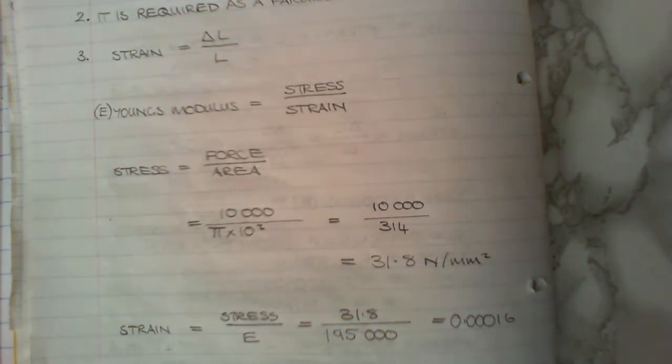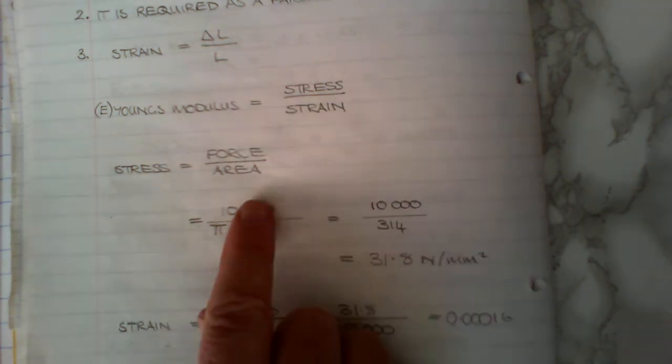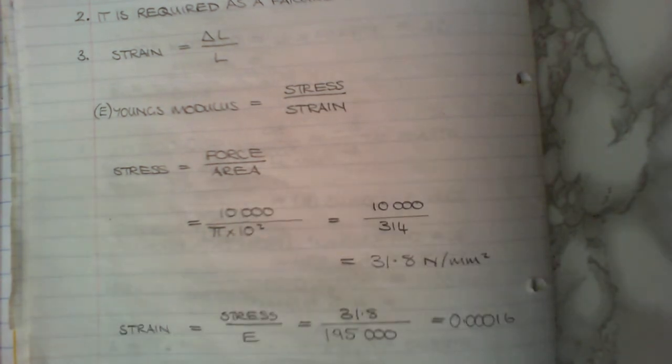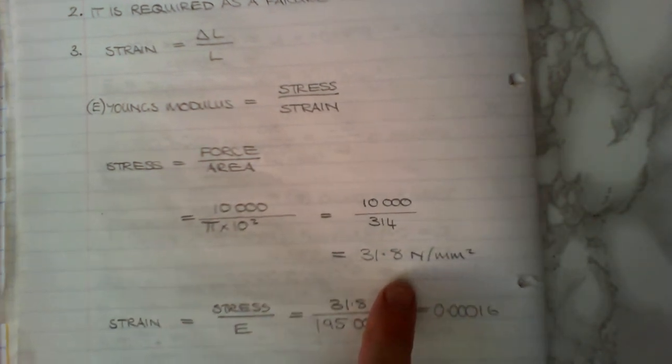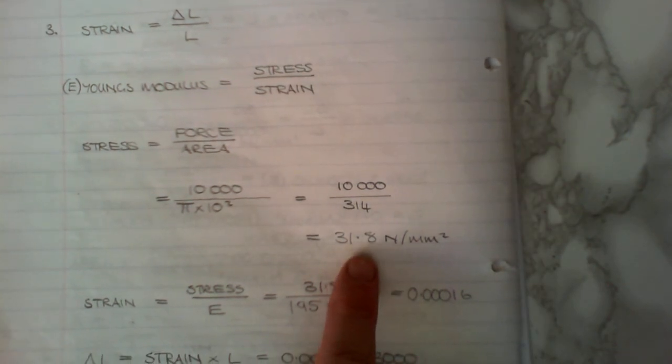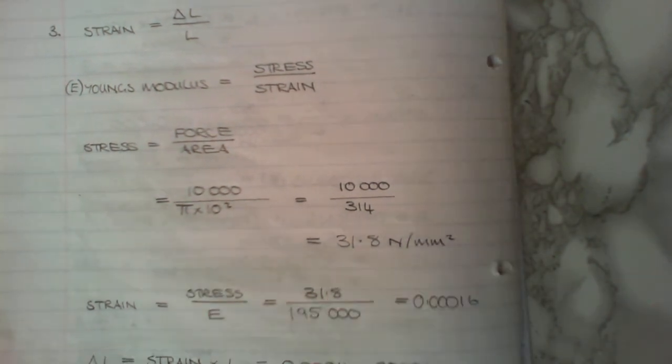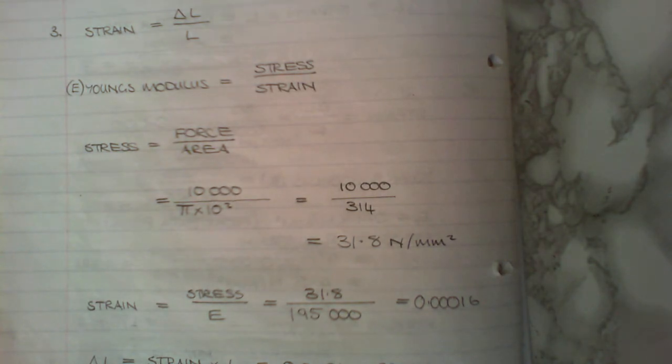Stress is force divided by area. So the force is 10kN, there we go, remember that in the thousands, divided by the area, and it gives me that number there. So the stress in that bar is 31N per millimetre squared.